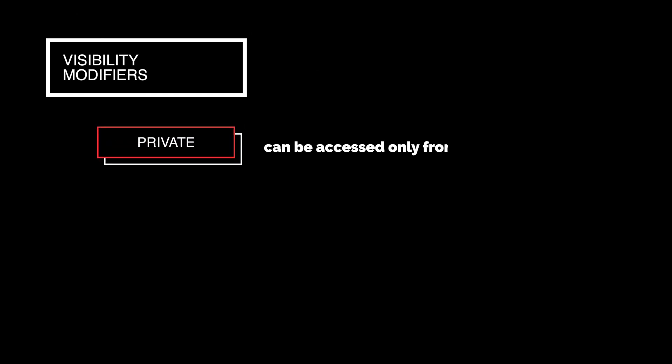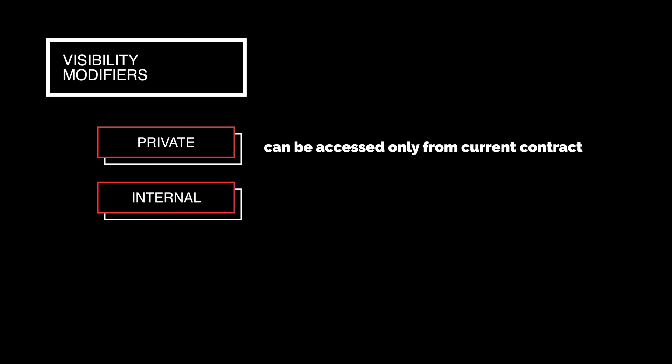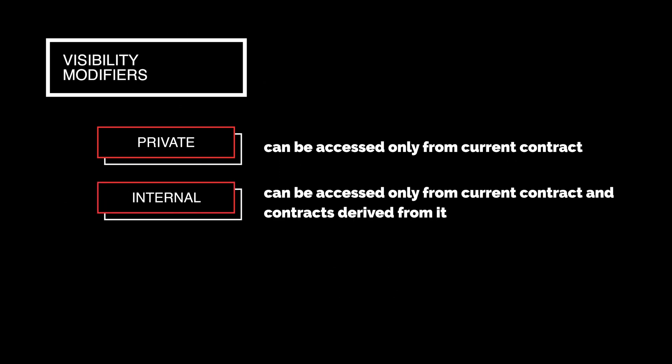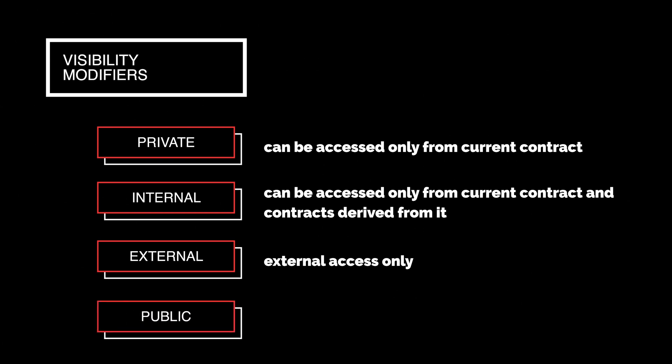There are four types of visibility modifiers, and here they are in the order of decreasing privacy. First, we have private, which means it can only be accessed from the current contract. Internal, which can be accessed only from the current contract and contracts that derive from it — so basically inherited. And then external, which means accounts or contracts outside of the current contract can access it, but internally they can't. Public, which means both external and internal accounts can access that particular function or variable.